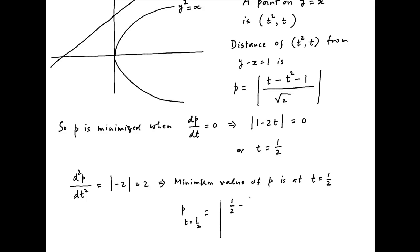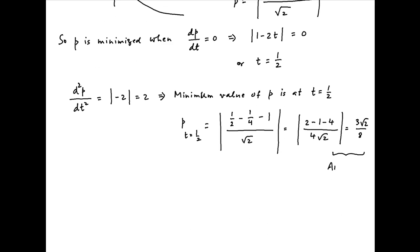And therefore, the minimum distance between the line and the parabola equals the absolute value of one-half minus one-fourth minus 1, all upon root 2, which simplifies to the absolute value of 2 minus 1 minus 4 upon 4 root 2, which equals 3 root 2 upon 8, which is the required answer.